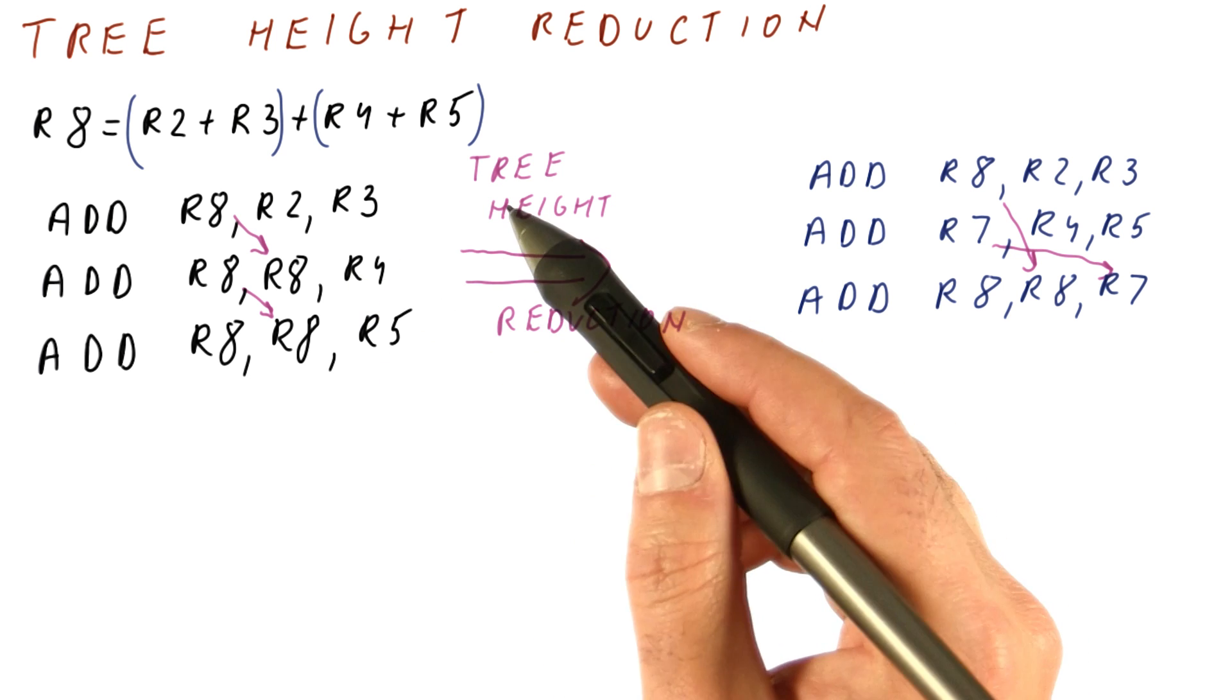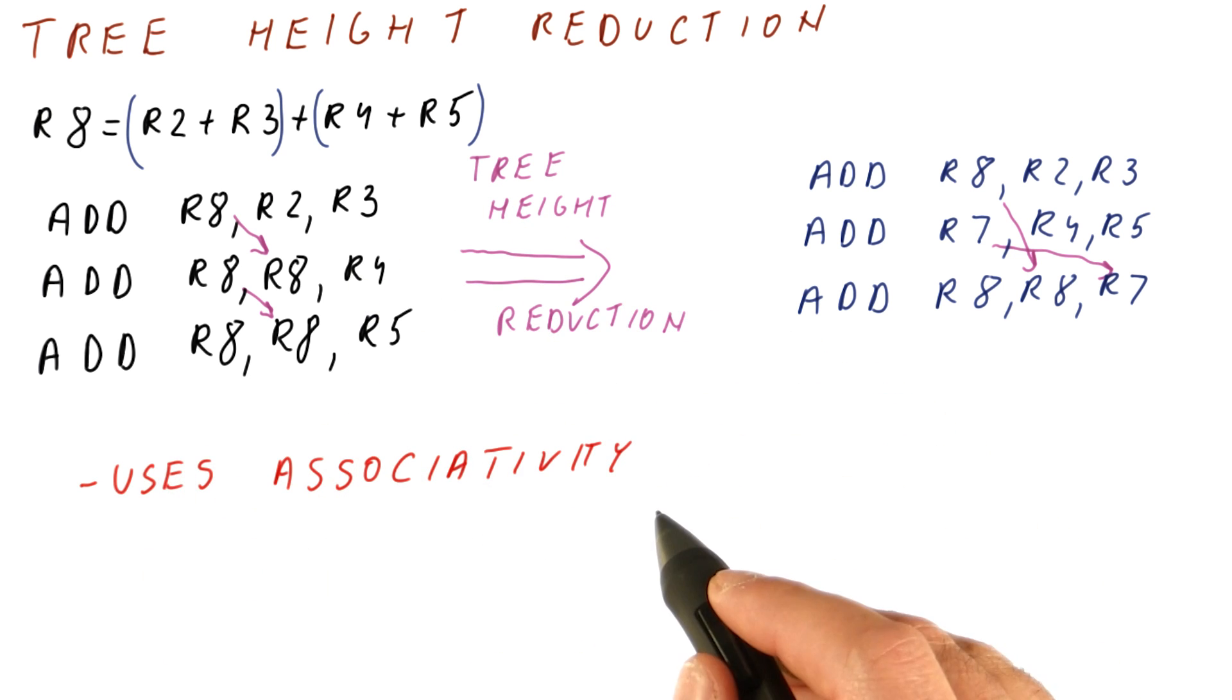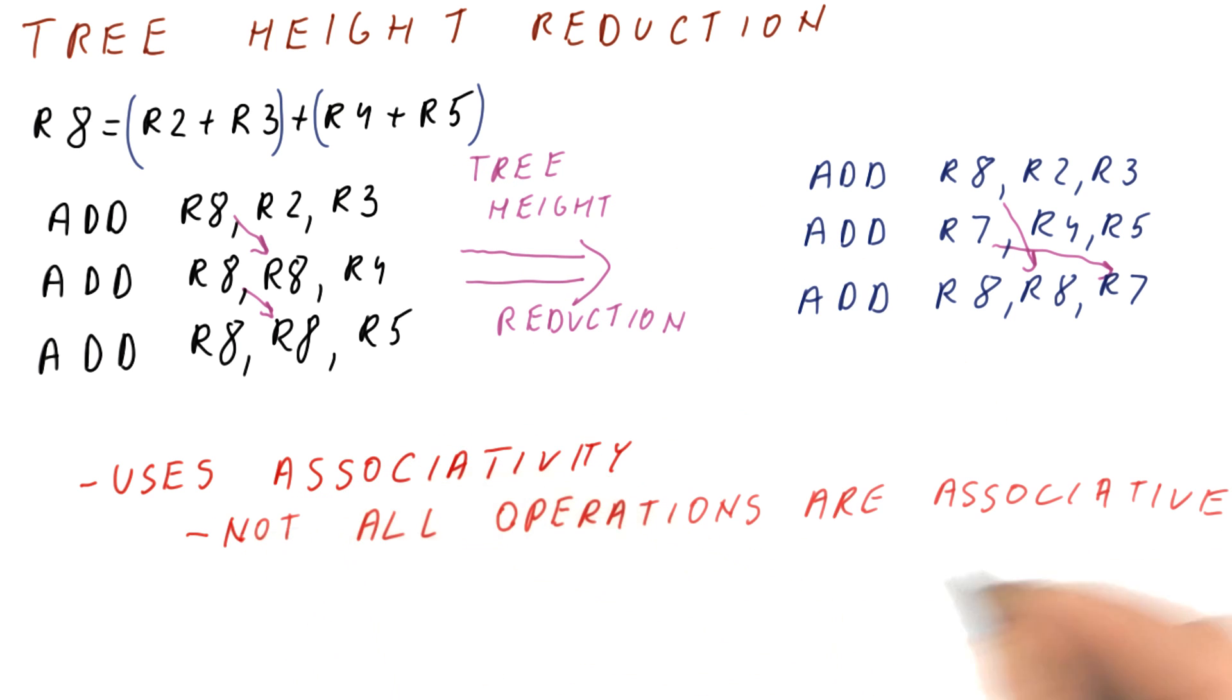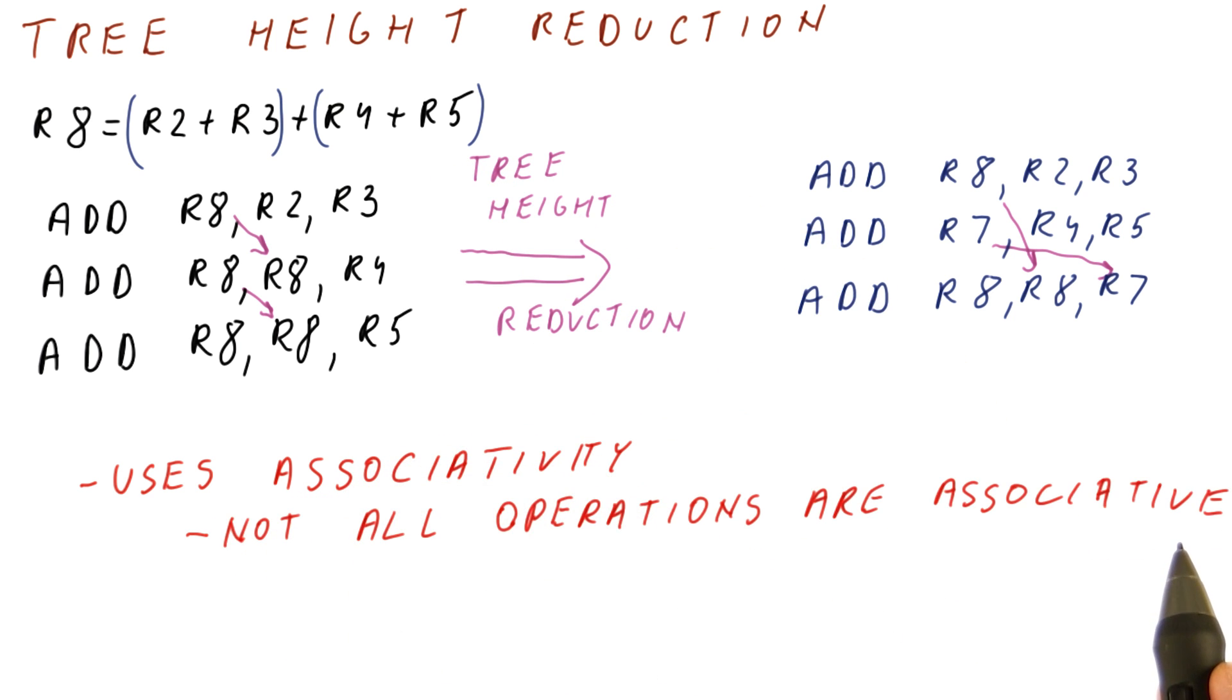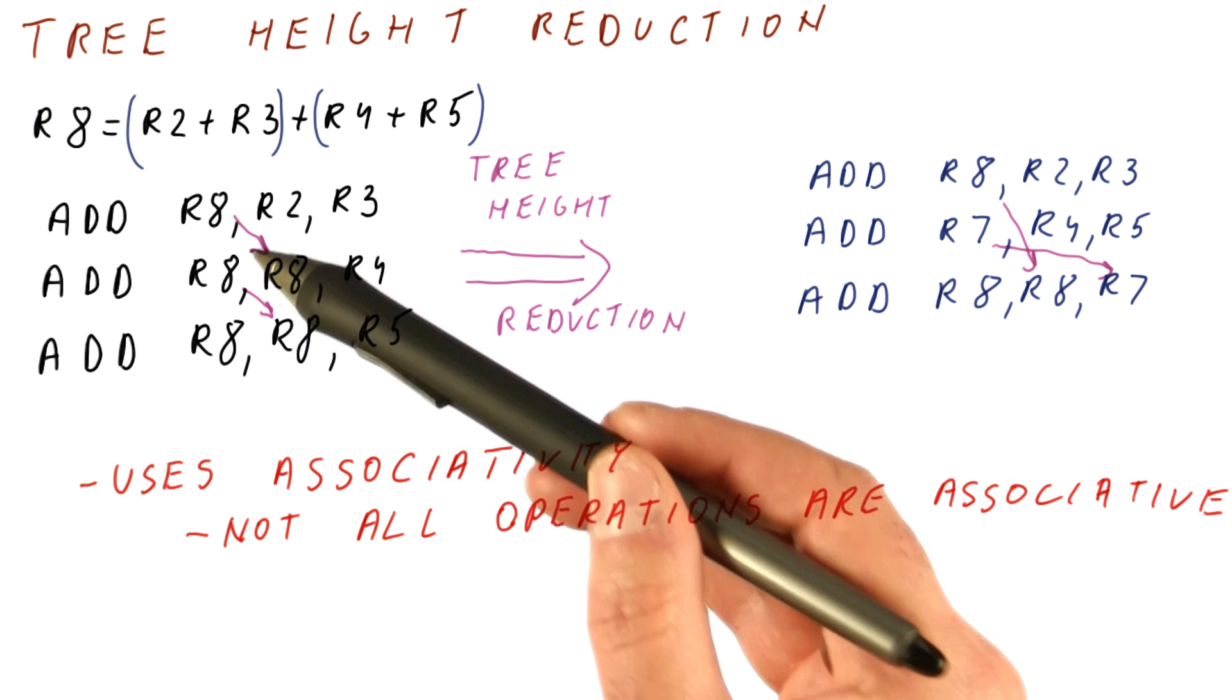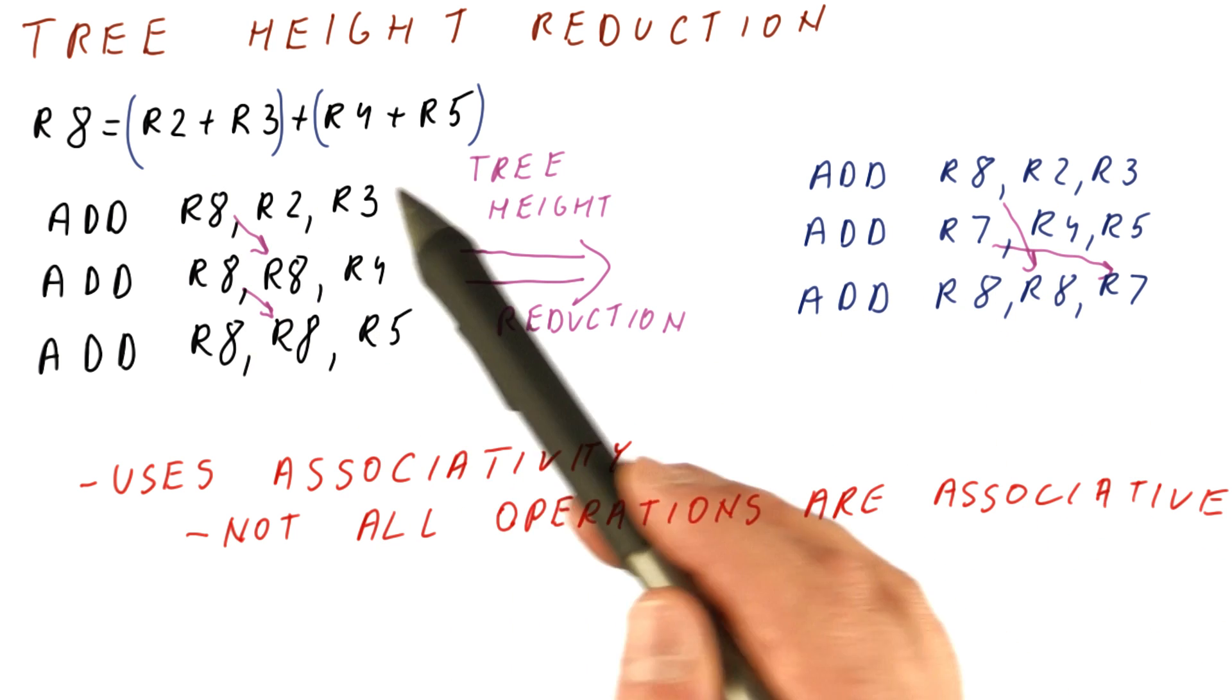Tree height reduction cannot always be done. It uses associativity of the addition operation, and you have to keep in mind that not all operations are associative. So we have to be careful we can only do this when the final result is the same as if we did things in the proper order.